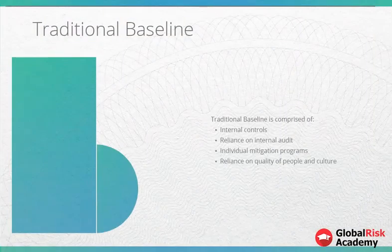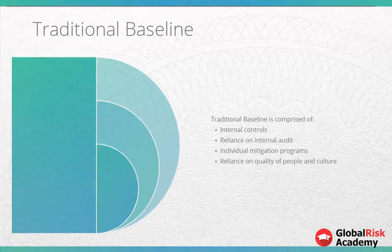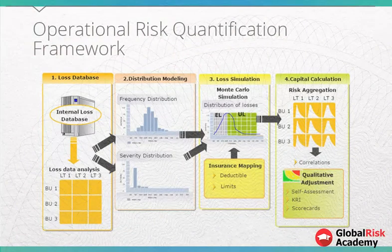The traditional baseline is comprised of internal controls, reliance on internal audit, individual mitigation programs, and reliance on quality of people and culture. With risk described as a measurement of uncertainty surrounding an event, risk quantification is of paramount importance in operational risk management. The process of operational risk quantification can be divided into four major steps: loss database, distribution modelling, loss simulation, and capital calculation.